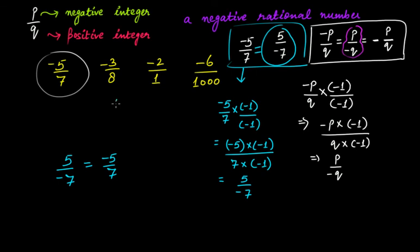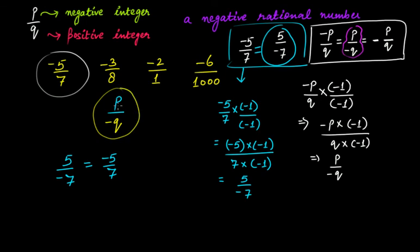This means that 5 over minus 7 equals minus 5 over 7. So if the numerator is a positive integer but the denominator is a negative integer, the number is still a negative rational number. We can always convert it to the standard form where the numerator is negative and the denominator is positive. This is a very important point to remember.